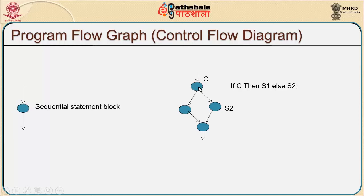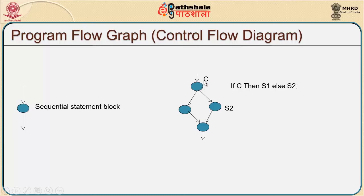When two edges emerge out of a single node, that node becomes a predicate node. What are the instances in which two edges emerge from a single node? It could be use of an if-then statement: if condition C, then S1, else S2, and continue. Looking at the graph presented, all lines with an arrow head indicate edges and circles indicate nodes. Node C is a predicate node since two edges emerge from this single node.